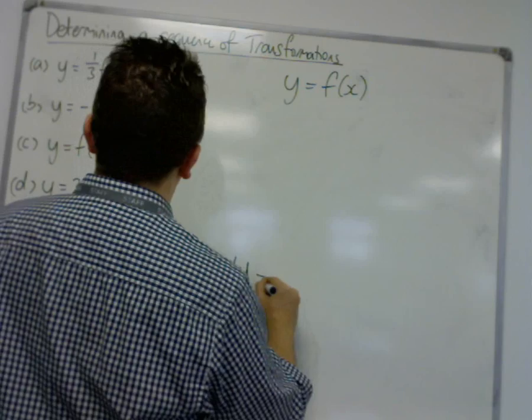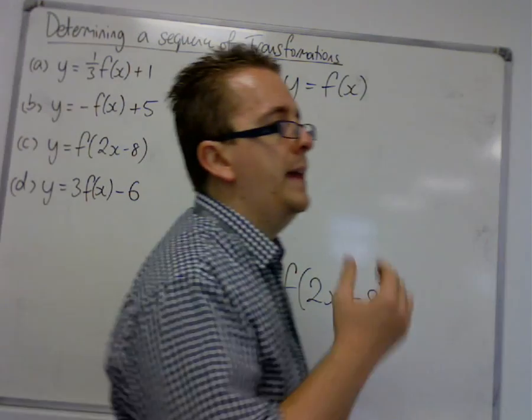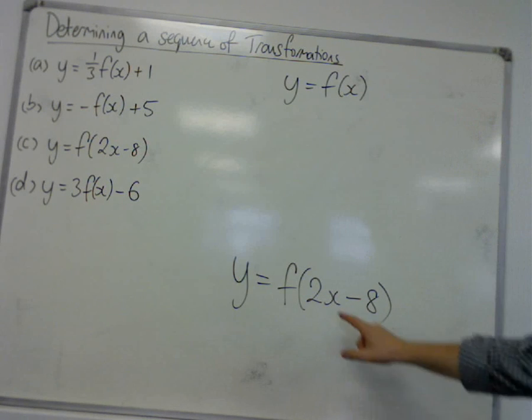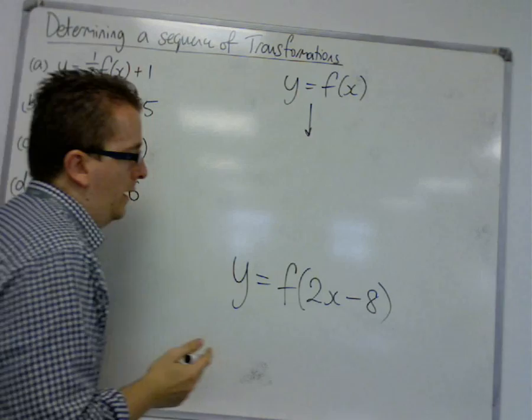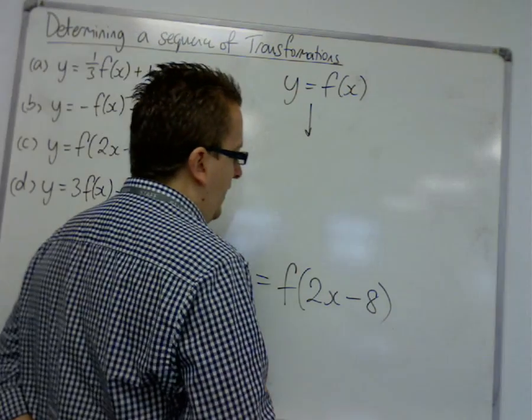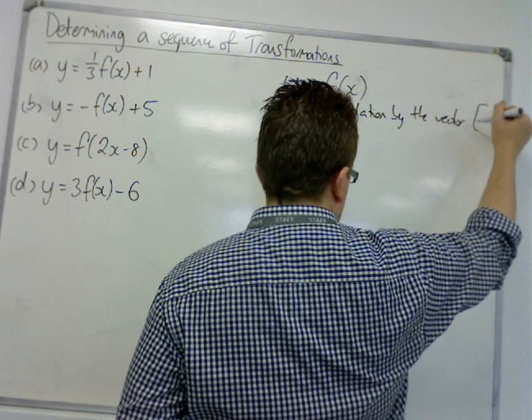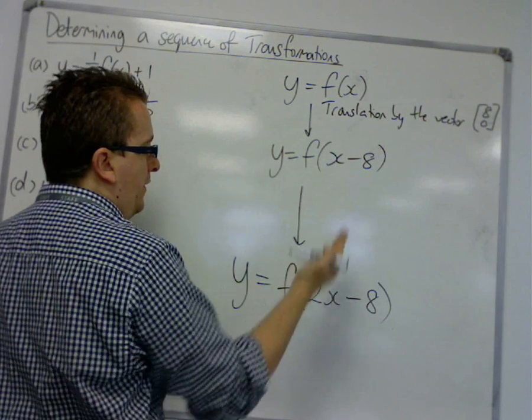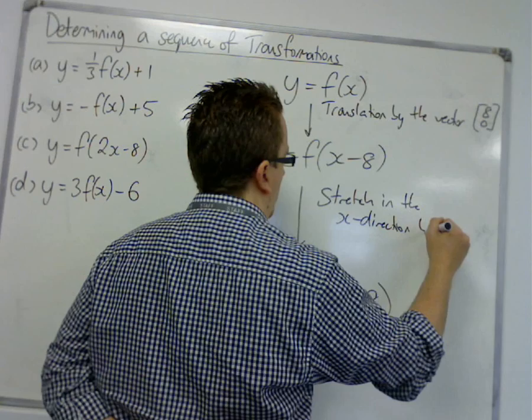Now, c. f of 2x minus 8. So, let's see what we're doing here. Again, this is looking like there was a stretch of the x-direction by a factor of a half, because of that 2. And it looks like there was a translation by the vector 8, 0. Now, in this case, I would say that, well, let's do this translation first. So, that would be 8, 0. So, we will get y is equal to f of x minus 8. And then, to get from there to there, this is the stretch in the x-direction by factor one-half.